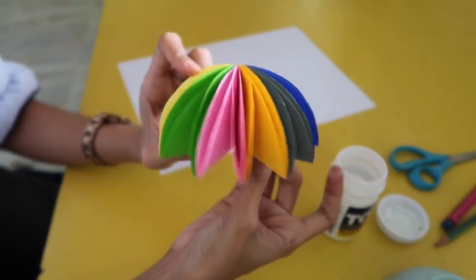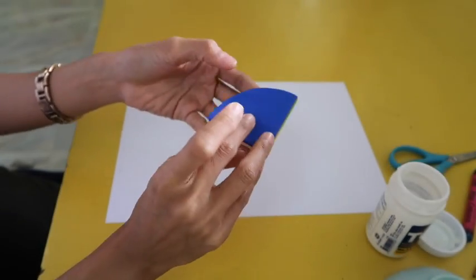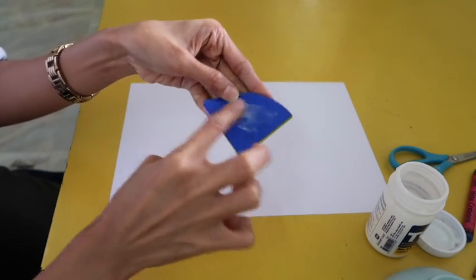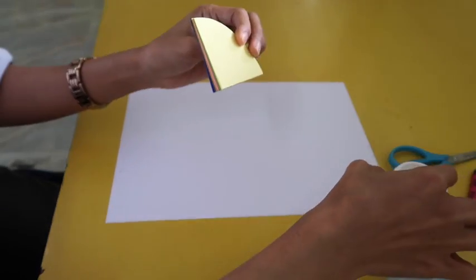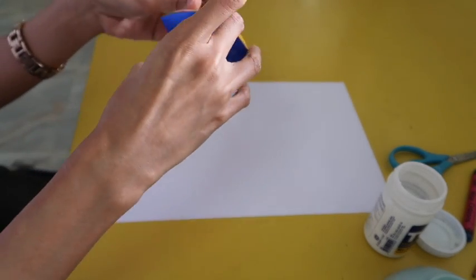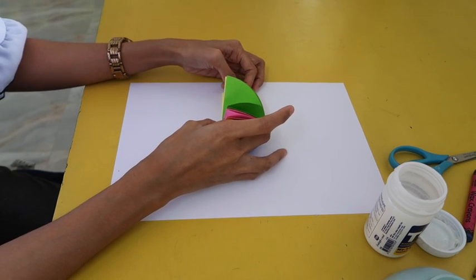This is what it looks like, and it's time to get our bond paper. We are going to put some glue at the back and on this side as well, then we are going to put this on the paper.